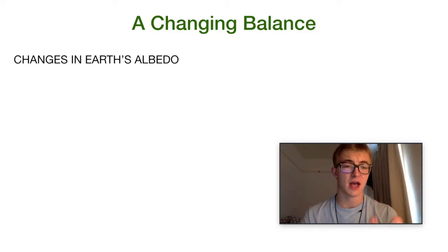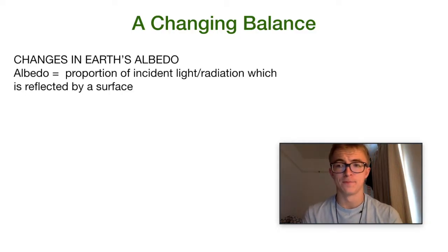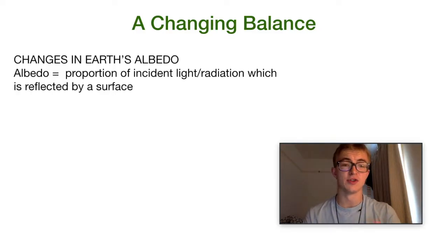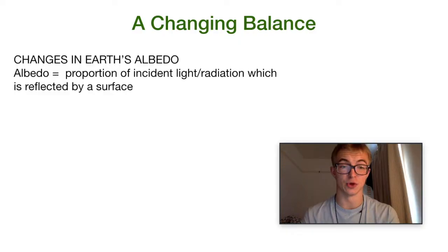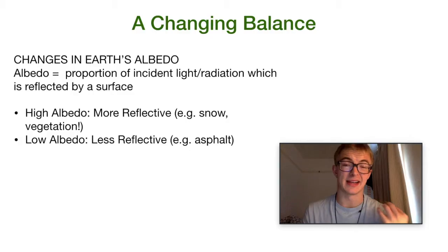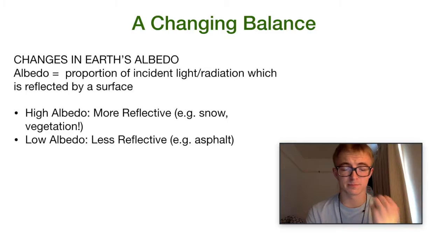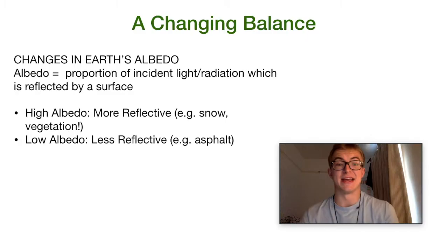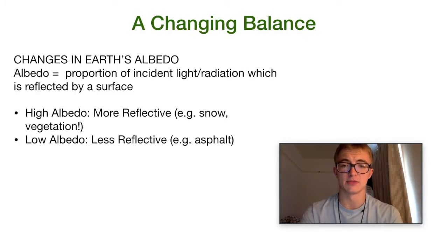Let's talk about albedo first and foremost. For those who haven't heard of it before, it's the proportion of light or radiation which is reflected by a surface. If you have a high albedo, that means it's really reflective. Low albedo means more of that radiation is absorbed. An example of a material with a high albedo would be something like snow, grass, or vegetation. A lower albedo would be something like asphalt — the material that highways and motorways are made out of. It absorbs a lot of that radiation. Something like darker soil is less able to reflect radiation.